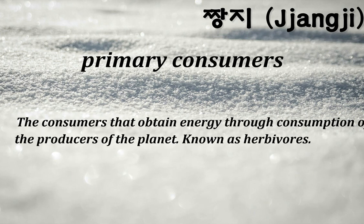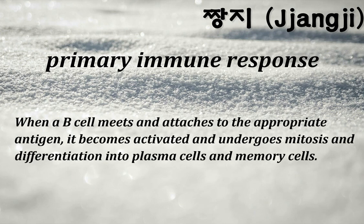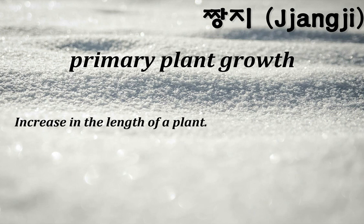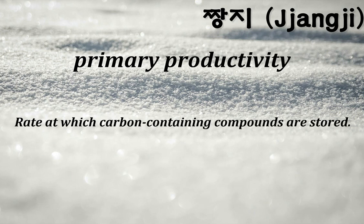Primary consumers: the consumers that obtain energy through consumption of the producers of the planet; known as herbivores. Primary immune response: when a B cell meets and attaches to the appropriate antigen, it becomes activated and undergoes mitosis and differentiation into plasma cells and memory cells. Primary oocytes: cells that begin meiosis and progress until prophase I, where they sit halted until the host female enters puberty. Primary productivity: rate at which carbon-containing compounds are stored.